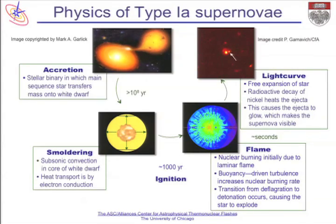Eventually things will reach a state where flames are ignited—we don't know how many, but we know they have to be in this convective region. Following that, we have the ordinary flame phase of turbulent nuclear combustion, and then somehow a detonation wave is triggered. Prior to the Flash Center it was thought that maybe the flame could be torn apart and therefore trigger a detonation, but how that happens is still not known.